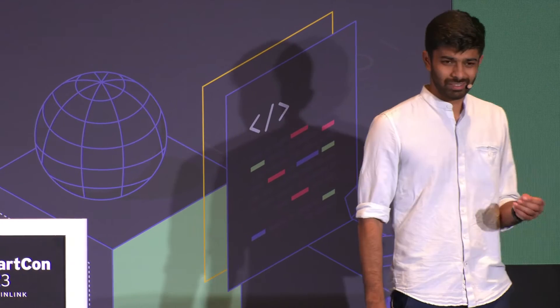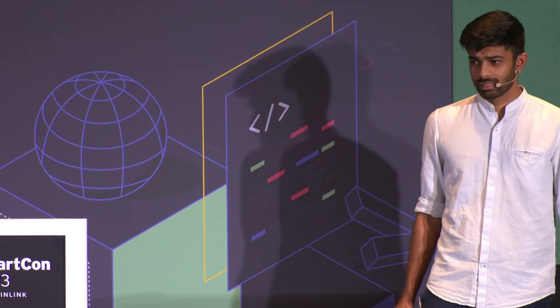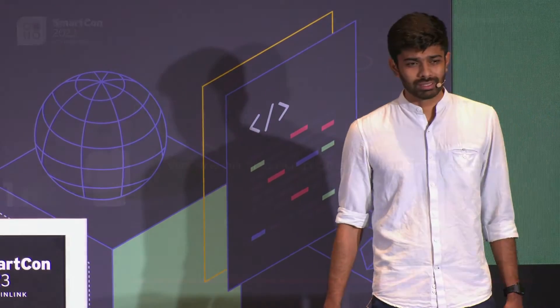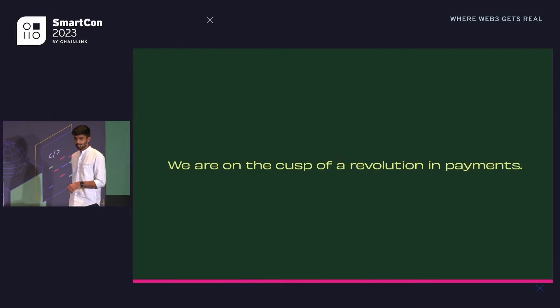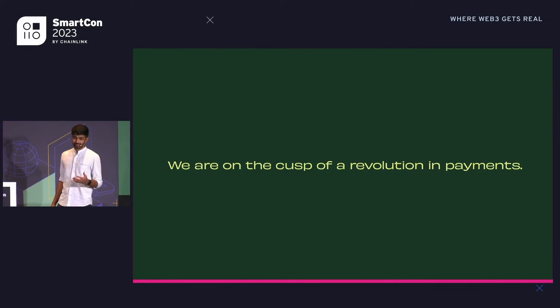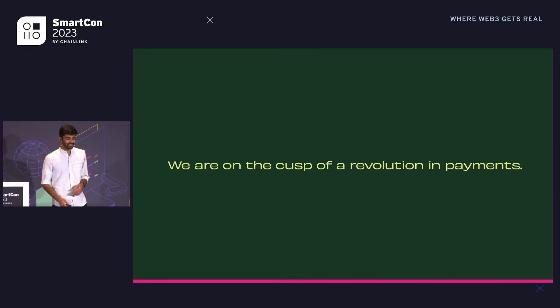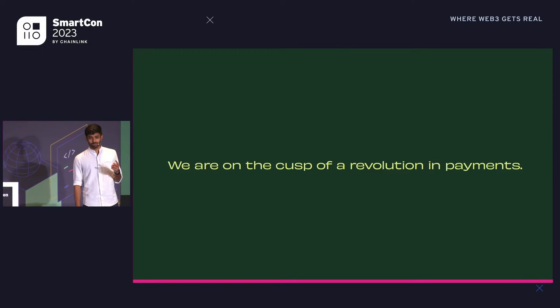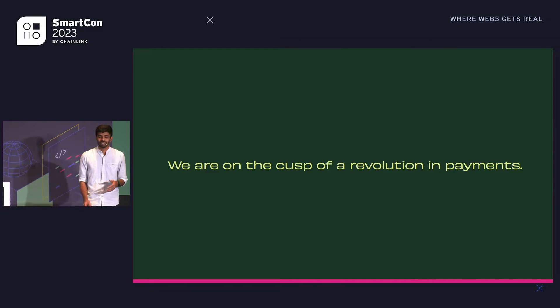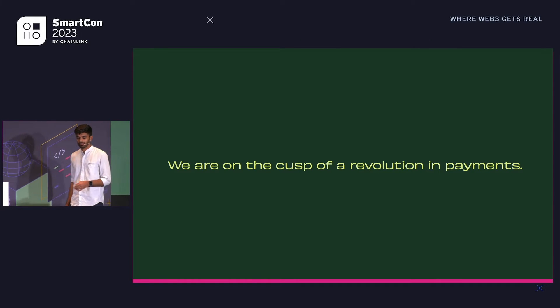We're on the cusp of a massive revolution in payments because of two reasons. One, payments — the backend infrastructure — is too old, it's too archaic. And number two, there are simply too many intermediaries.